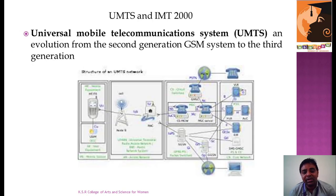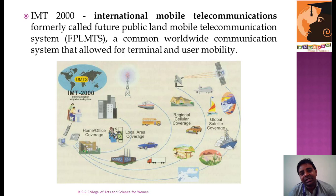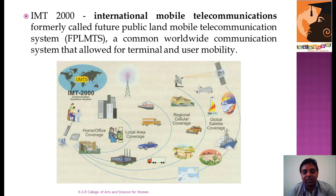UMTS stands for Universal Mobile Telecommunication System, which started in Europe and represents the transition from second generation to third generation mobile. IMT stands for International Mobile Telecommunication, providing a common worldwide communication system for user mobility. As shown in the picture, all kinds of devices and amenities are used in telecommunication systems via wireless technology.